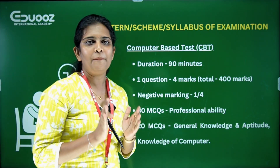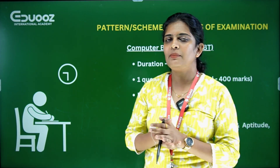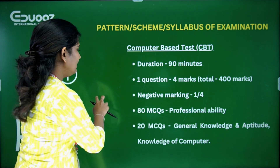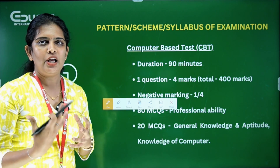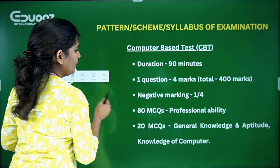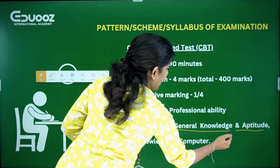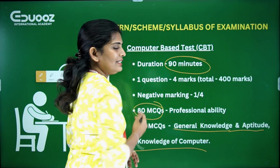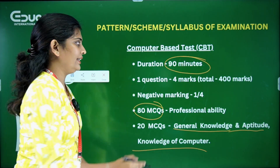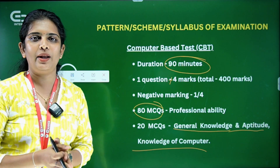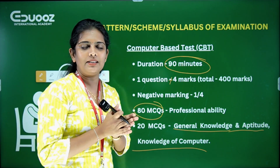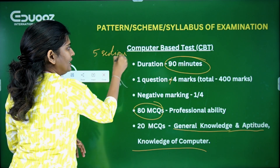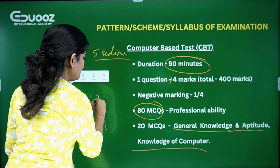The computer-based online test has a total of 100 questions — including general aptitude and knowledge of computers, with 20 questions per section. The total exam duration is 90 minutes. Each correct answer gives plus 4 points, and each wrong answer deducts 0.33 marks.